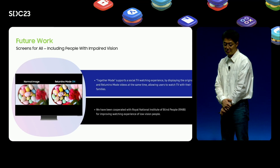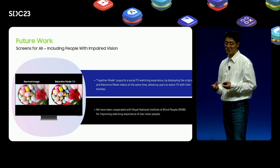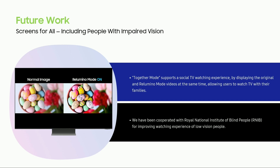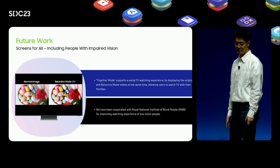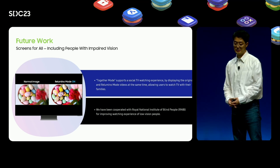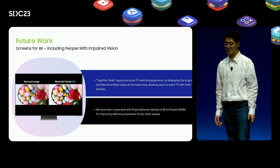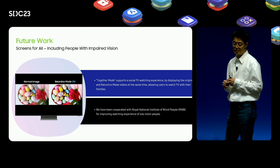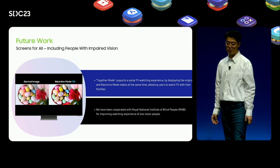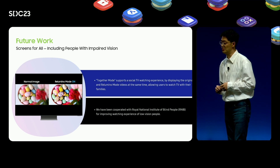Future work: we will provide a new feature called together mode for Rilumino mode. The together mode supports the social TV watching experience by displaying the original and Rilumino mode videos at the same time, allowing users to watch TV with their families. Currently, Rilumino mode is only available on select TV models, but we plan to gradually expand this feature. We will continue to work to improve the viewing experience for people with low vision.